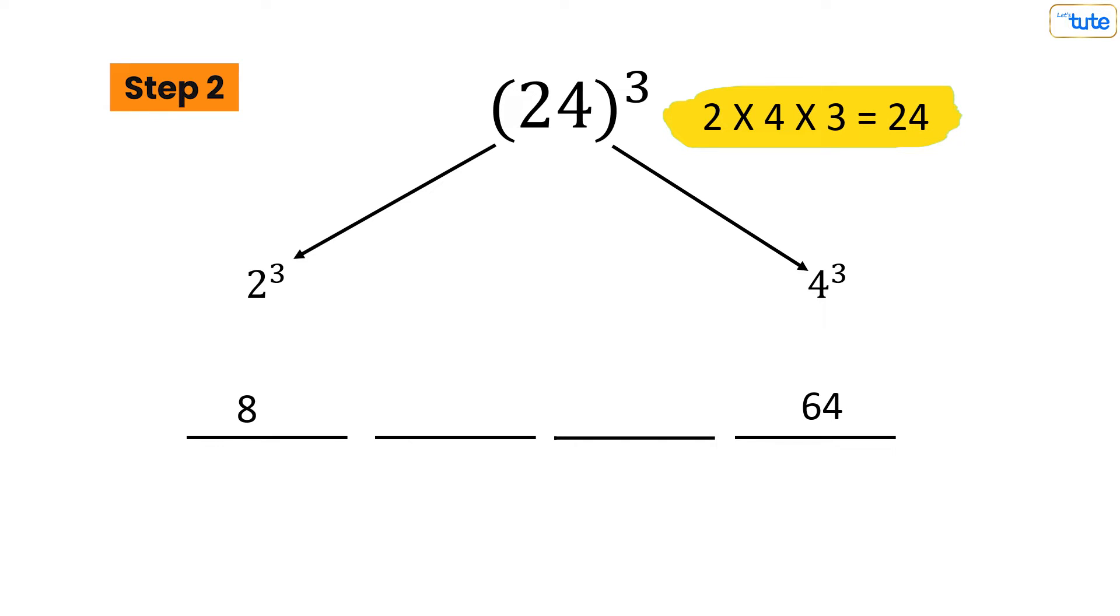Then we'll multiply this 24 with each digit of the original number whose cube we have to find. So multiply 24 by 2 to fill the blank space over here, then multiply 24 by 4 to fill the third blank.